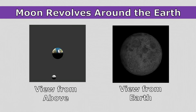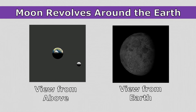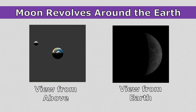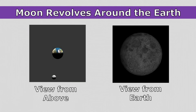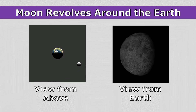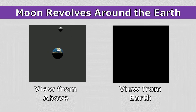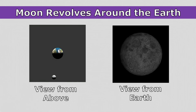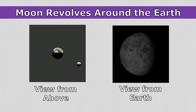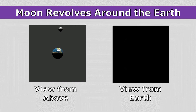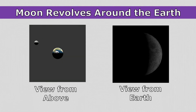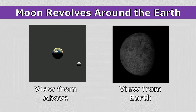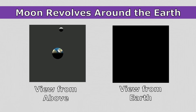The moon revolves around the earth, and this also causes certain patterns in nature to appear. You can see on the left that half of the moon is always lit up by the sun. But because the moon is revolving around the earth, we see the moon from a different angle each night. Because we can only see the part of the moon that is being lit up by the sun each day, it almost appears to change shape. We call these different ways the moon can look the phases of the moon.